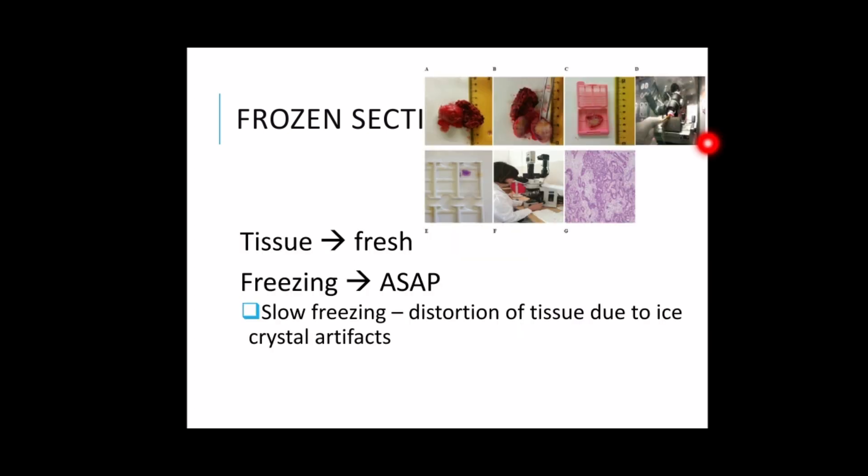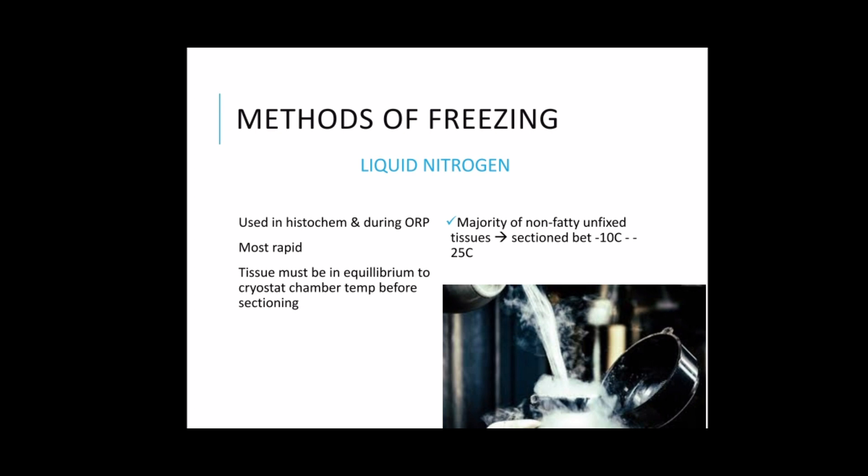The tissue for freezing should be fresh and freezing should be done as quickly as possible. Slow freezing can cause distortion of tissue due to ice crystal artifacts. The more commonly used methods of freezing include liquid nitrogen, which is generally used in histochemistry and during operative procedures and is the most rapid of the commonly available freezing agents. Its main disadvantage is that soft tissue is liable to crack due to rapid expansion of ice within the tissue, producing ice crystals or freeze artifacts.